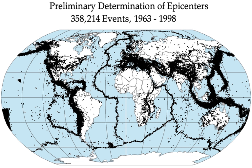Earthquakes often occur in volcanic regions, caused both by tectonic faults and the movement of magma in volcanoes. Such earthquakes can serve as an early warning of volcanic eruptions, as during the 1980 eruption of Mount St. Helens. Earthquake swarms can serve as markers for the location of flowing magma throughout volcanoes, and can be recorded by seismometers and tiltmeters and used as sensors to predict imminent eruptions.